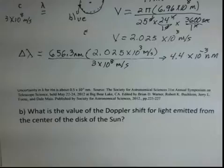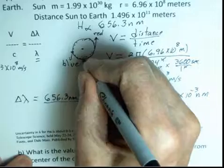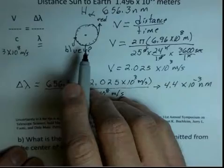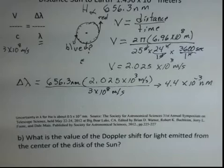Another question. Suppose we look at the light from the center of the disk of the sun. So now asking about what's the Doppler shift at the center of the disk of the sun. You need to think about this a little bit.